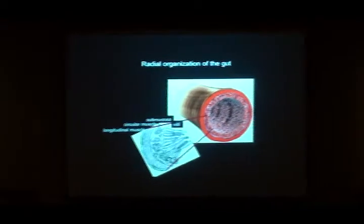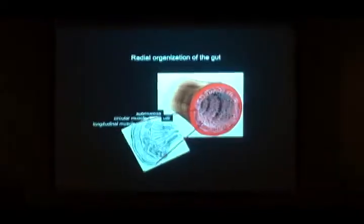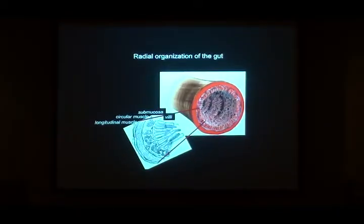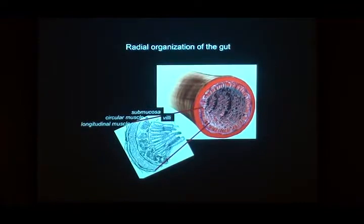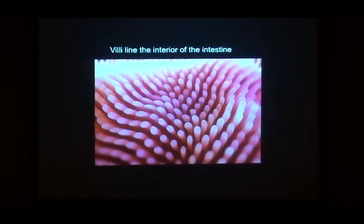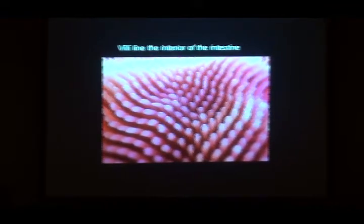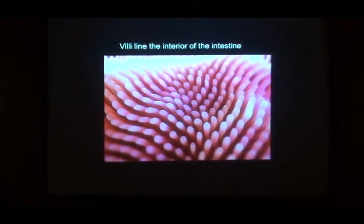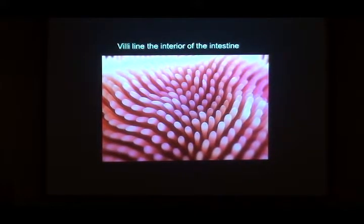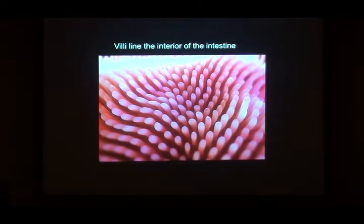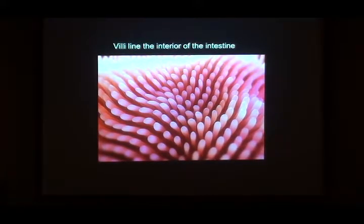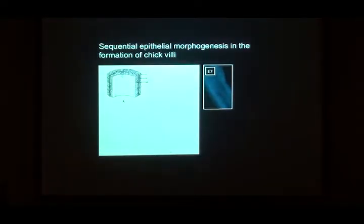The intestinal wall contains connective tissue and glands, followed by a series of muscular layers. From the inside out, this is a view of the inside of the intestine. These are the villi.